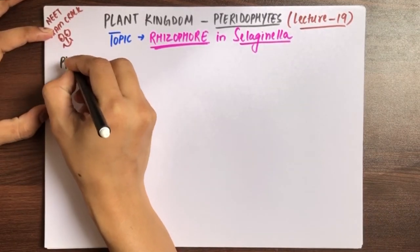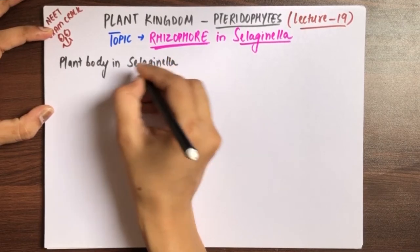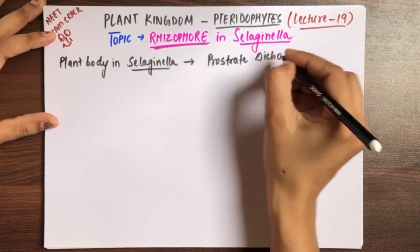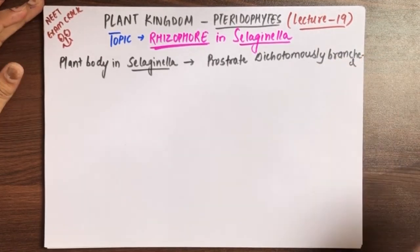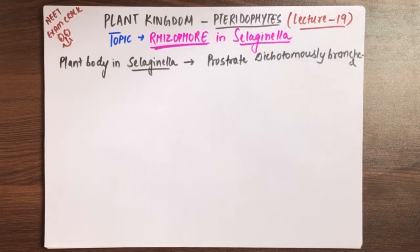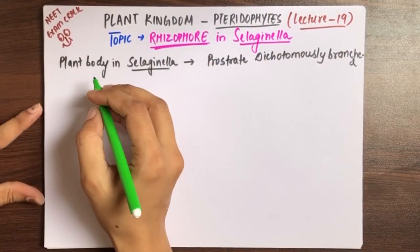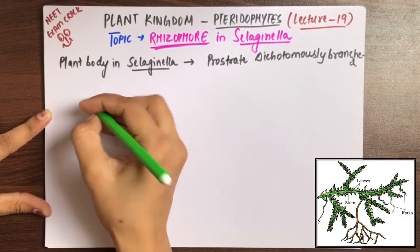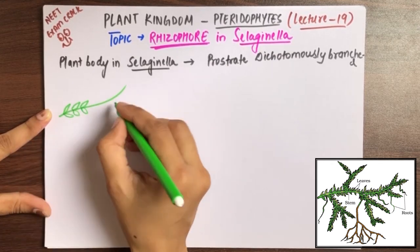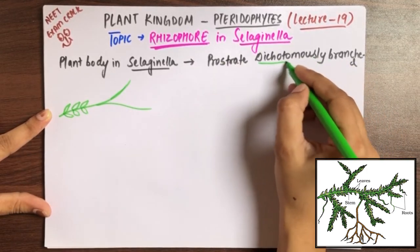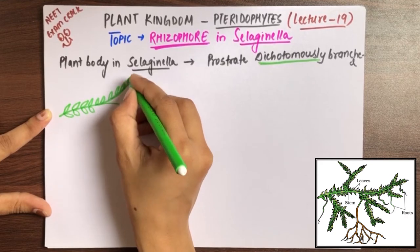The plant body of Selaginella is prostrate and dichotomously branched. Prostrate means the body grows horizontally — sideways. Erect means straight/upright. When the body grows horizontally, we call it prostrate. Here you can see Selaginella's body with branches that are dichotomously branched — meaning two branches come out at each division.